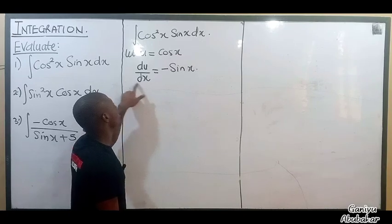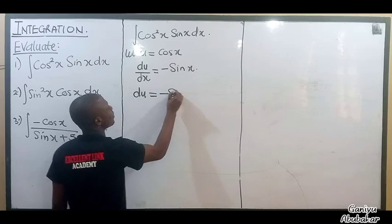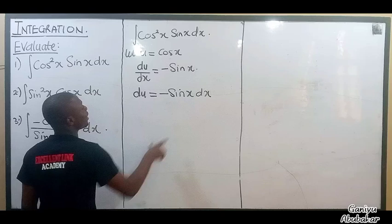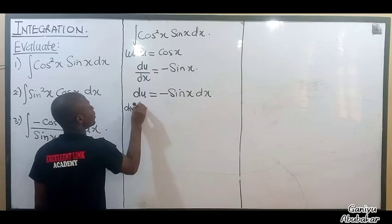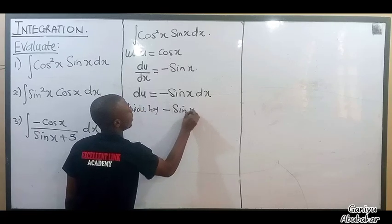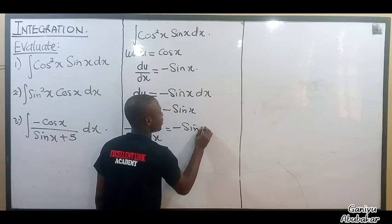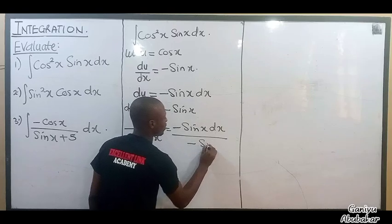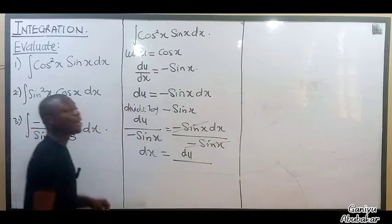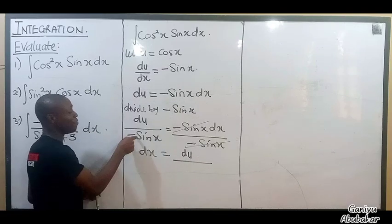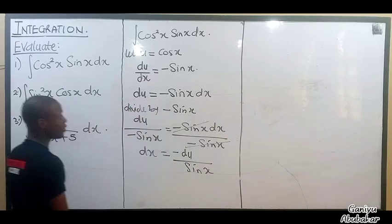So let's make dx the subject of the formula. I'll have that du equals minus sin x dx. Next, make dx the subject — divide by minus sin x. So I'll have du over minus sin x equals minus sin x dx over minus sin x. This cancels, so dx equals minus du over sin x. It's not proper to put a negative in the denominator, so take the minus up: dx equals minus du over sin x.